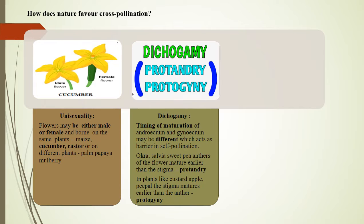Dichogamy: The timings of maturation of androecium and gynoecium may be different, known as dichogamy. This difference in timings of maturation acts as a barrier to self-pollination. In plants such as okra, sweet peas, and salvia, anthers of flowers mature earlier than the stigma — known as protandry. In plants such as custard apple and peepal, the stigma matures earlier than the anther — known as protogyny.